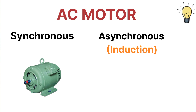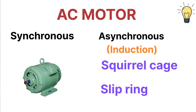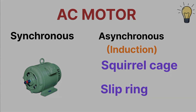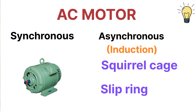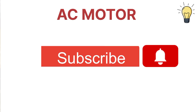The induction motor or asynchronous motor is further divided into two parts: the squirrel cage induction motor and the slip ring induction motor. These are the types of AC motors. Let's end this video here — see you in the next video, thanks for watching.